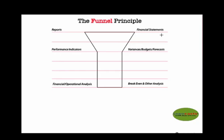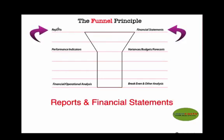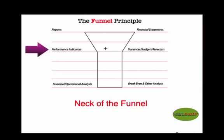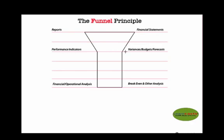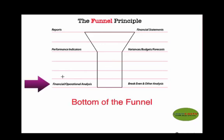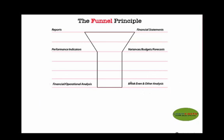For instance, the funnel principle says that most times we are looking at the top of the funnel, and the top of the funnel represents the reports or financial statements that we are reviewing. As you go down towards the neck of the funnel, you get some performance indicators — variances, budgets, forecasts — elements that indicate performance from the reports and financial statements. But it's only when you drill down right to the bottom of the funnel that you perform real financial or operational analysis, which could be break-even or any other kind of analysis.